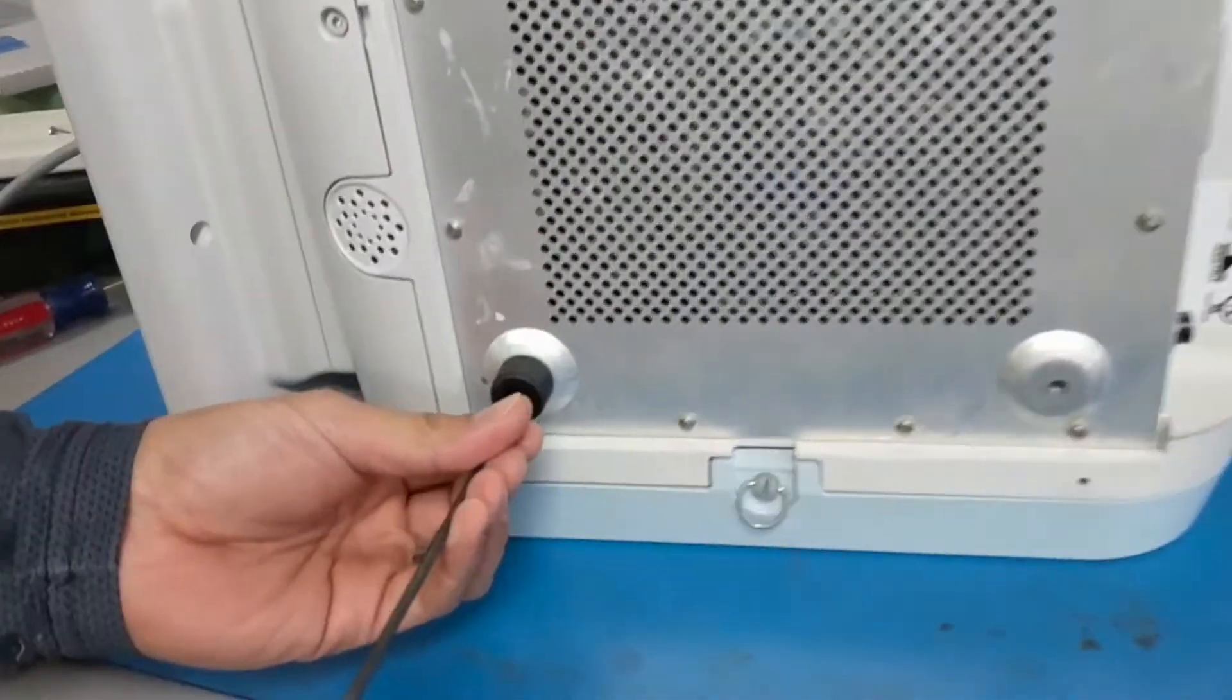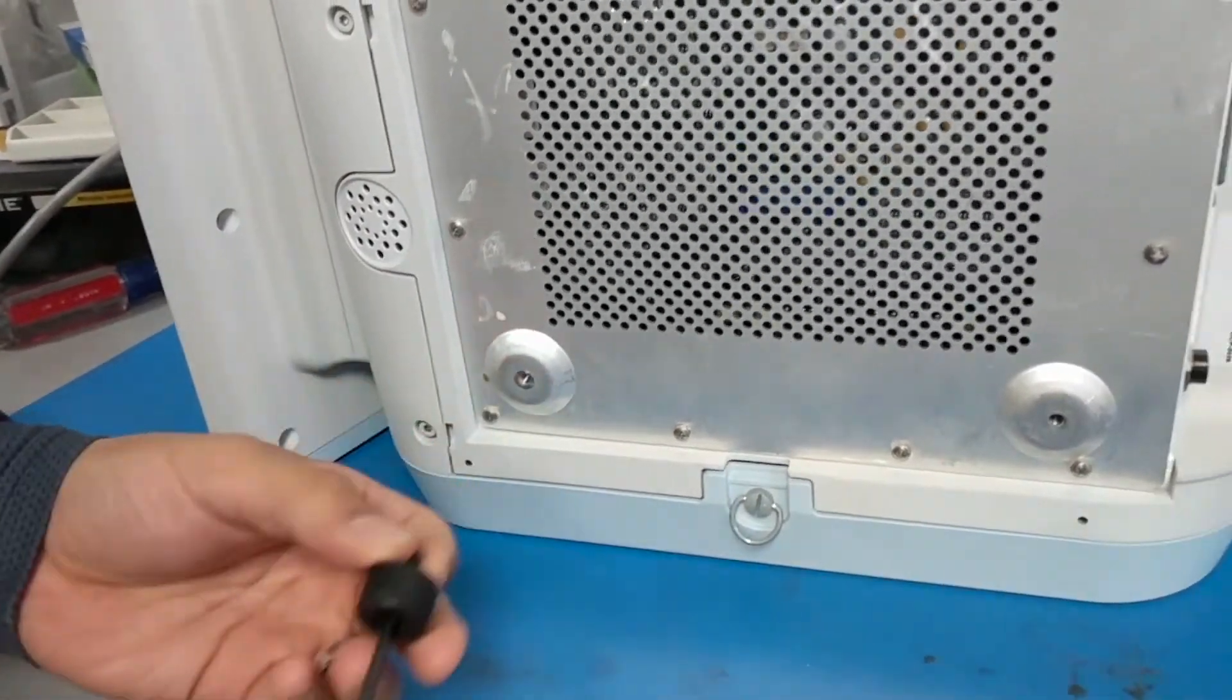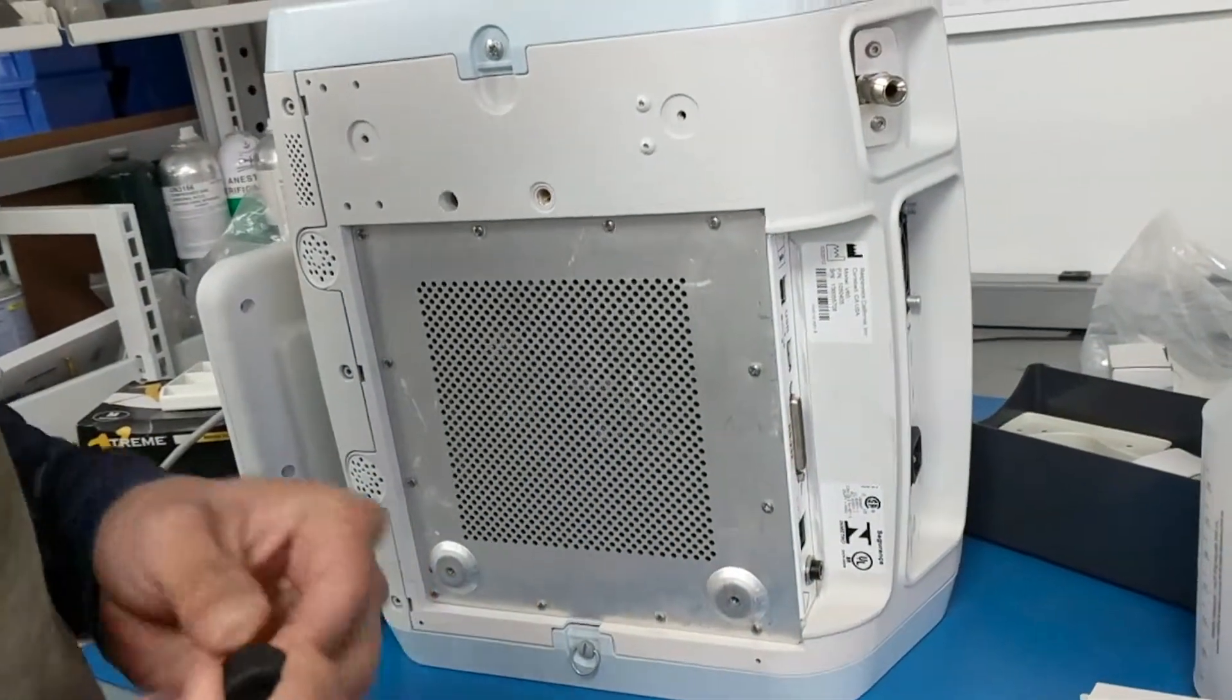These bottom two feet, the screws that go into these bottom two feet, you will use. You have to remove them, squeeze them out.